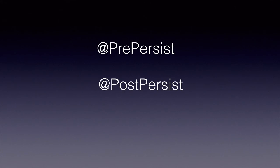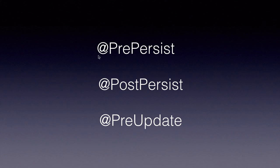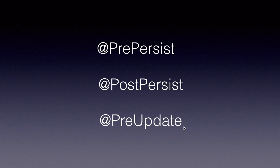Finally, JPA also gives us several callback annotations. So if you want to implement lifecycle methods — for example, before saving an object into the database, if you want to do certain work — you can simply create a method and mark it with the pre-persist annotation. The JPA providers will call that method before saving the data to the database. Similarly, there are post-persist and pre-update annotations.